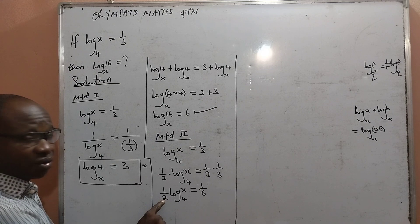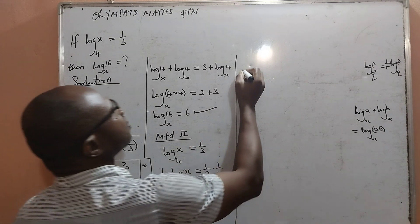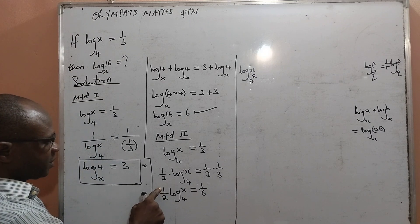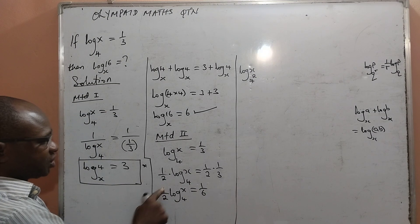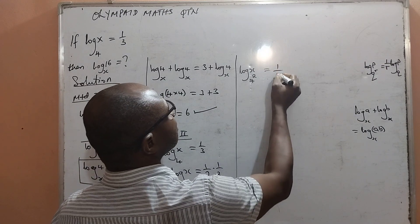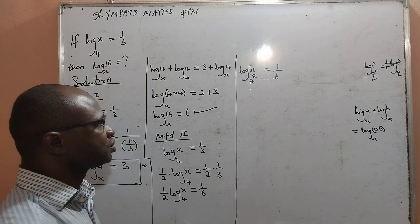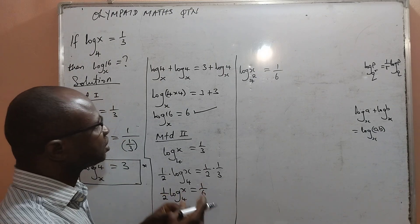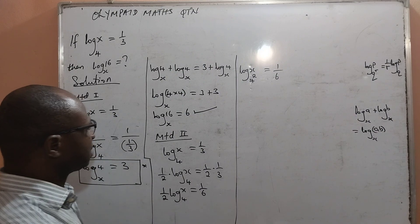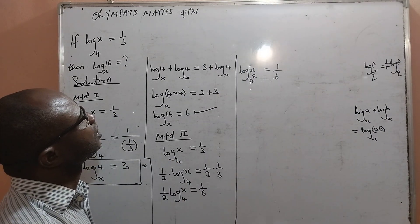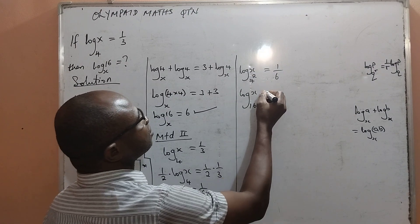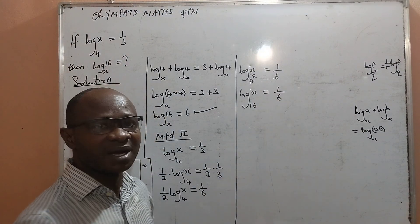So I am going to have log x base 4 squared — the reciprocal of 2 means 2 becomes the power of the base — equal to 1/6. This gives me log x base 4² which is log x base 16, equal to 1/6. I hope this point is well understood because that is the key step.